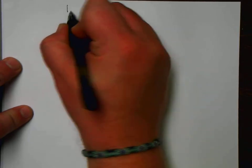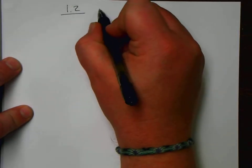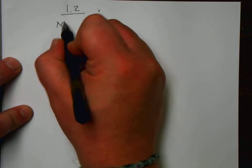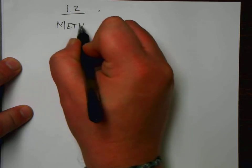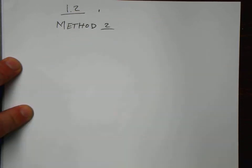Alright, so we've taken a look at finding the prime factorizations, trying to simplify radical expressions. Now let's take a look at the second method. So this is unit 1.2, and here we're going to take a look at method number 2.